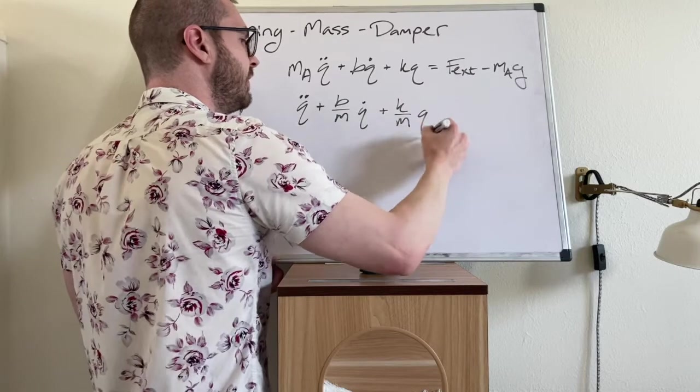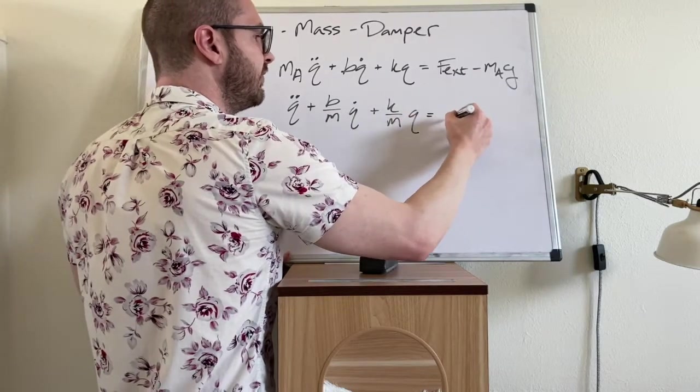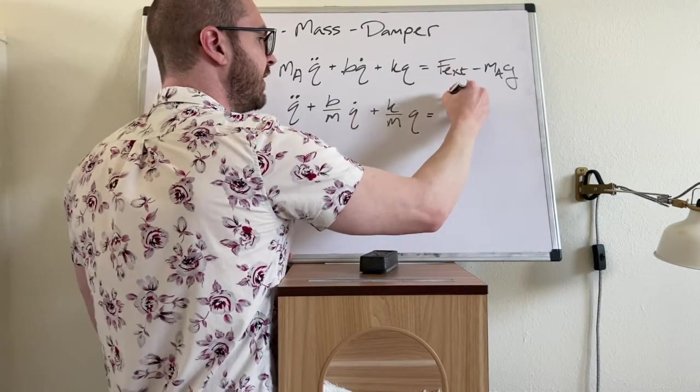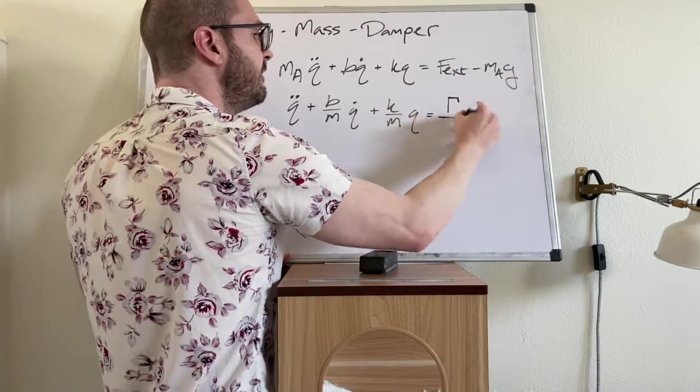And then this is equal to, and what I'm going to do for the right hand side is I'm going to replace all of these with the Greek letter gamma.